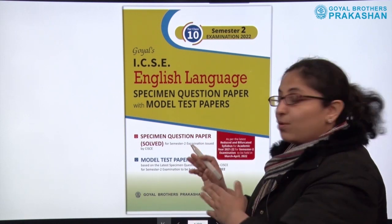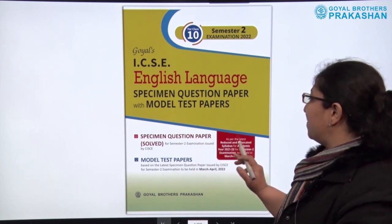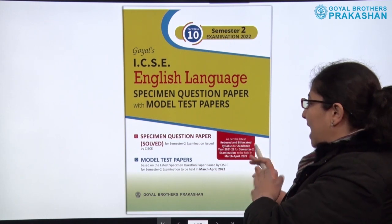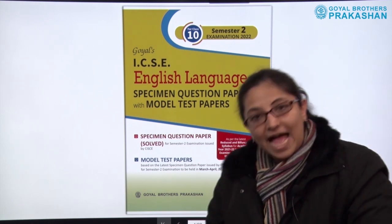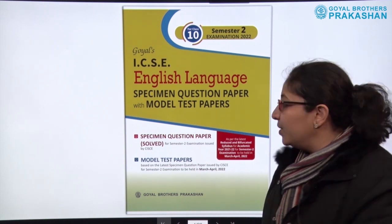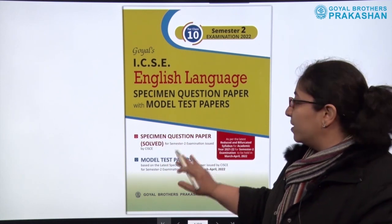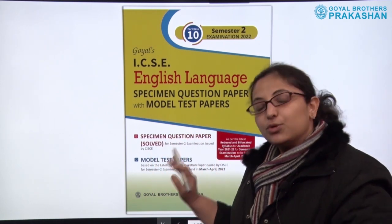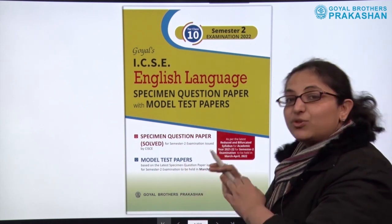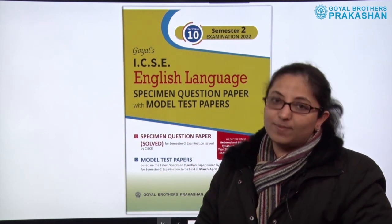This is the book for English language. This book is as per the latest reduced and bifurcated syllabus for academic year 2021-22 for this semester's examination. Also, this book is based on the specimen question paper which is solved for semester two examination. This book also has model test papers which are strictly based on the latest specimen question paper released by the council.